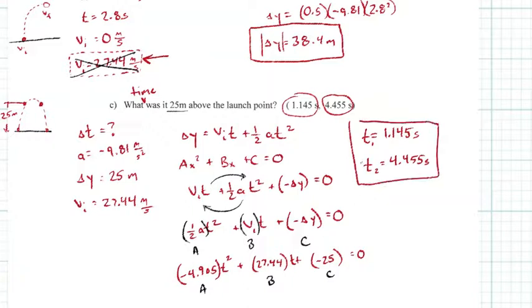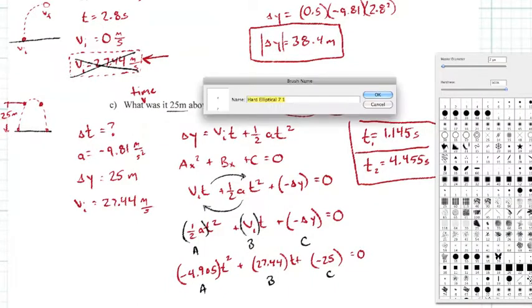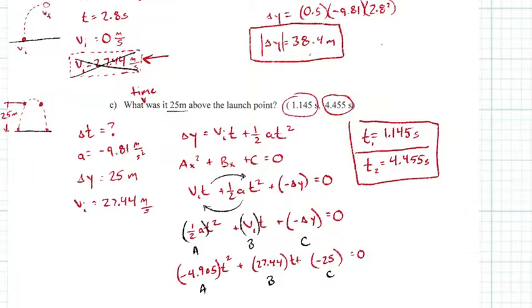Both of these are correct answers because there are two times where the object, in this case the ball, is 25 meters above the launch point, and it's at these two times. I hope that helps. This is our third review problem and the other two should be online as well. Good luck on your test tomorrow and I'll see you then. Take care.